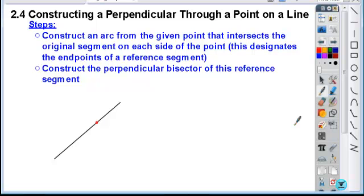And so basically what we're going to do here is we're going to take this given point. This one is on a line. We're going to construct an arc from that given point that intersects the segment on each side, thus in turn designating a reference segment.